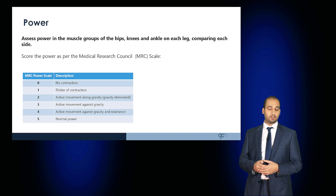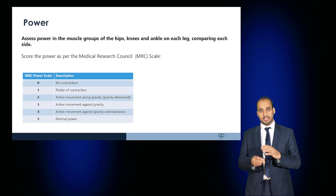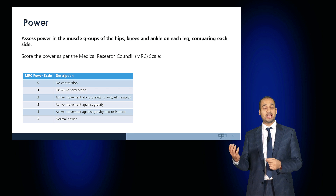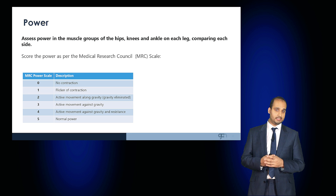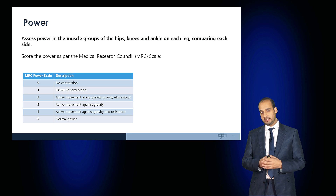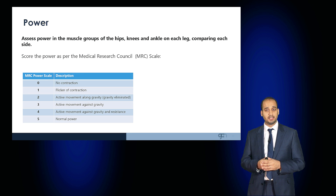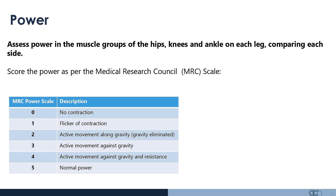After assessing tone, examine the power in the muscle groups of the hips, knees and ankles on each leg, comparing each side. Score power using the Medical Research Council Scale, which runs from 0 to 5: 0 indicates no muscle contraction, 1 is a flicker of contraction, 2 is active movement along gravity, 3 is active movement against gravity, 4 is active movement against gravity and resistance, and 5 is normal power.